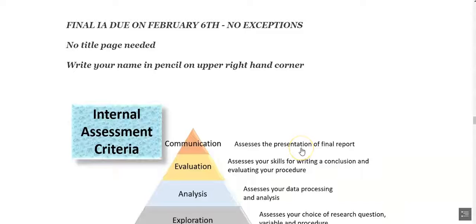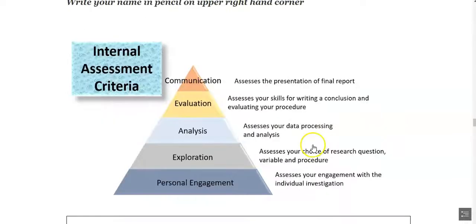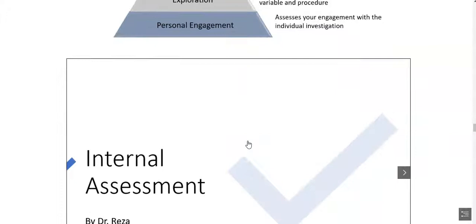And the data and the model that I have already used is Bloom's taxonomy which I make my IA using the Bloom's taxonomy. So these are the internal assessment criteria starting from personal engagement at the bottom and then exploration, analysis, evaluation and communication according to Bloom's taxonomy model.